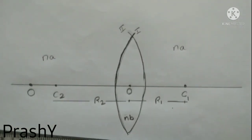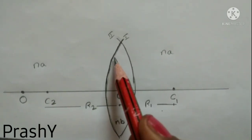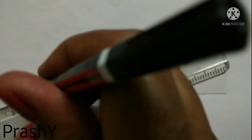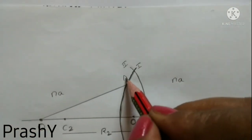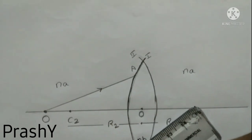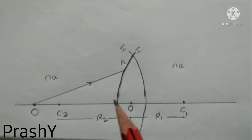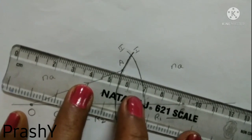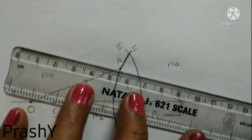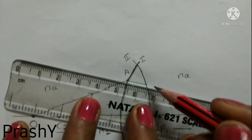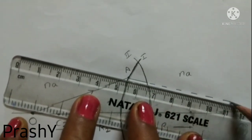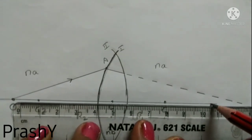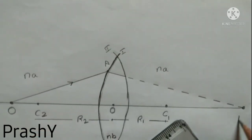Now let us consider a point object placed on the principal axis. Let the ray from this object be incident on the convex surface at point A. This is the incident ray. At point A, the ray gets refracted and forms an image on the other side. This is the refracted ray. The point of intersection of the principal axis and the refracted ray is taken as I-dash.